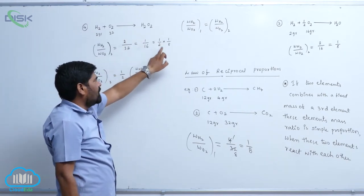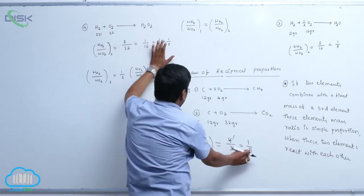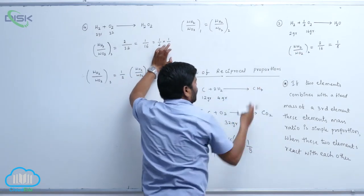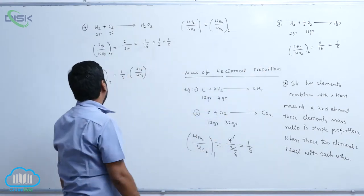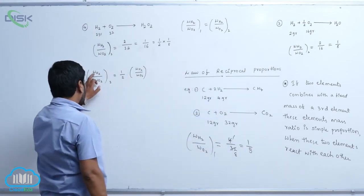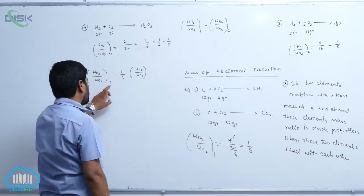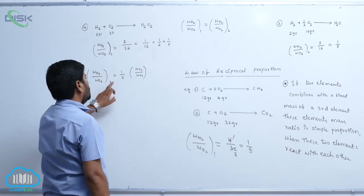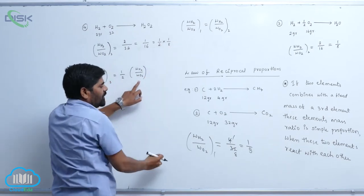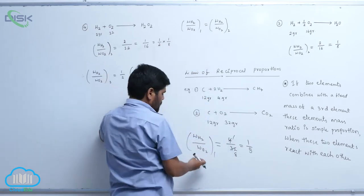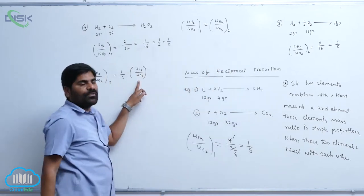It converts into 1 by 2 into 1 by 8. So here is 1 by 8, here is also 1 by 8. The weight of H2 and weight of O2 in third reaction equals to 1 by 2. Instead of 1 by 8, we can write this one or that one.